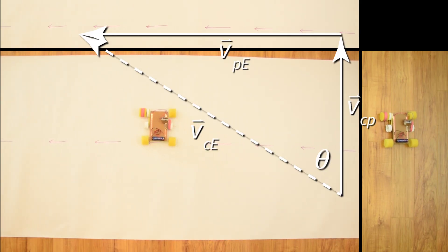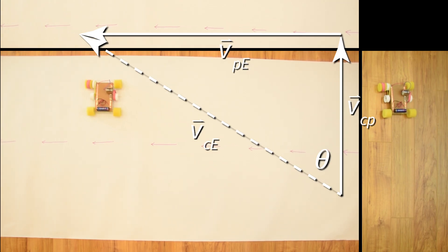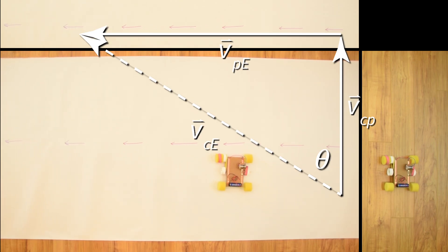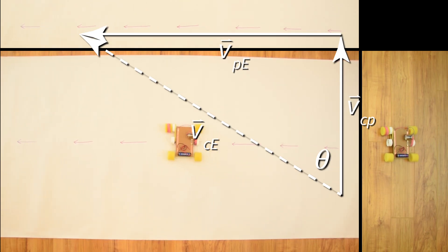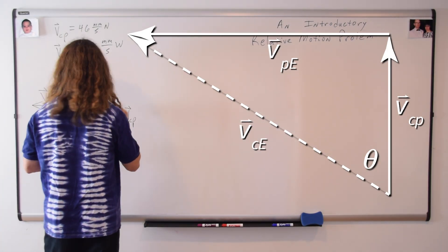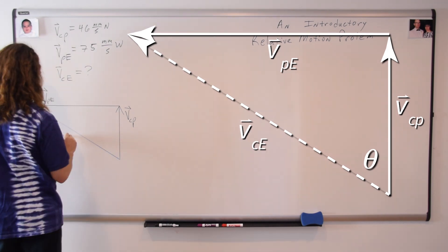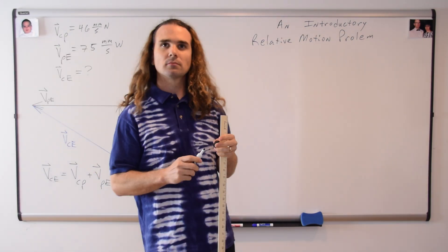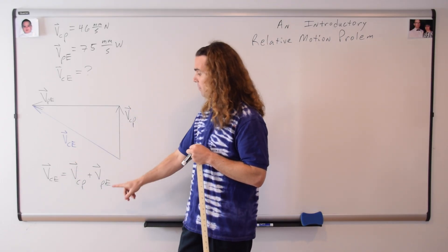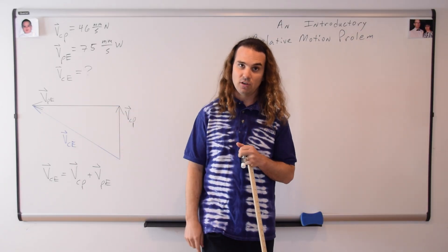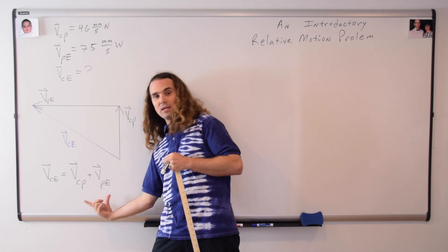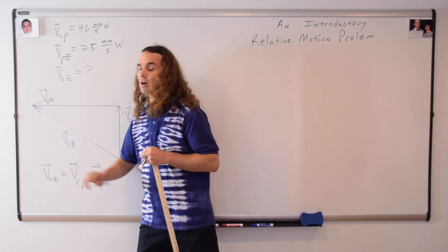Now let's add our tip-to-tail vector diagram. You can see that the velocity of the car with respect to the paper, plus the velocity of the paper with respect to the earth, is equal to the velocity of the car with respect to the earth. The common subscript, either on the inside or the outside, drops out, and you end up with the velocity of the car with respect to the earth.